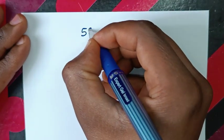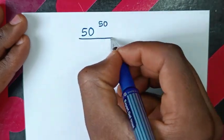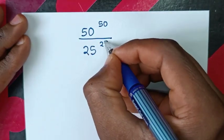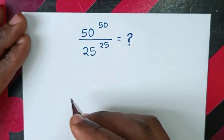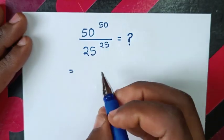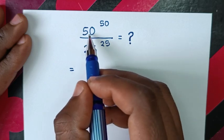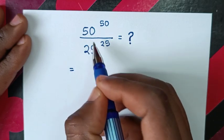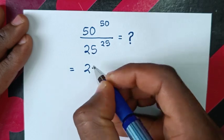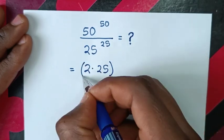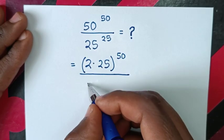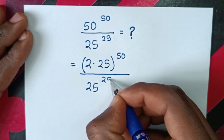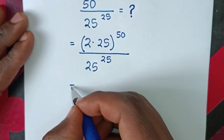Now for the second method, starting from the same problem: 50^50 over 25^25. Here we change the base of 50 — since 50 equals 2 times 25, we write it as (2 times 25) to the power of 50, all over 25 to the power of 25.